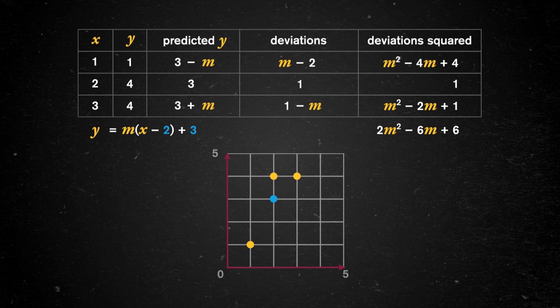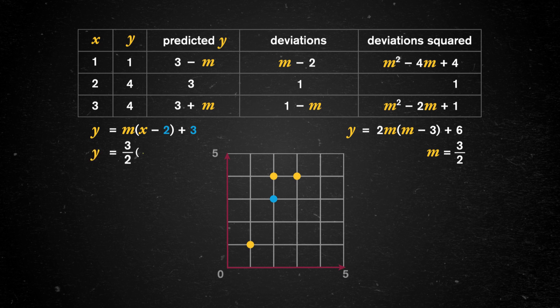Bingo! Fortunately, our first coefficient is positive 2, so the graph of the parabola y = 2m² − 6m + 6 will be facing up, and the vertex will be the minimum. We can rewrite this in the form 2(m)(m − 3) + 6 and see that the minimum occurs for m = 3/2. That means the slope of our linear least squares regression equation will be 3 halves. So our line of best fit is y = (3/2)(x − 2) + 3, and if we graph it next to our original data points, we can see that it mostly follows them. And that's the best we can do.